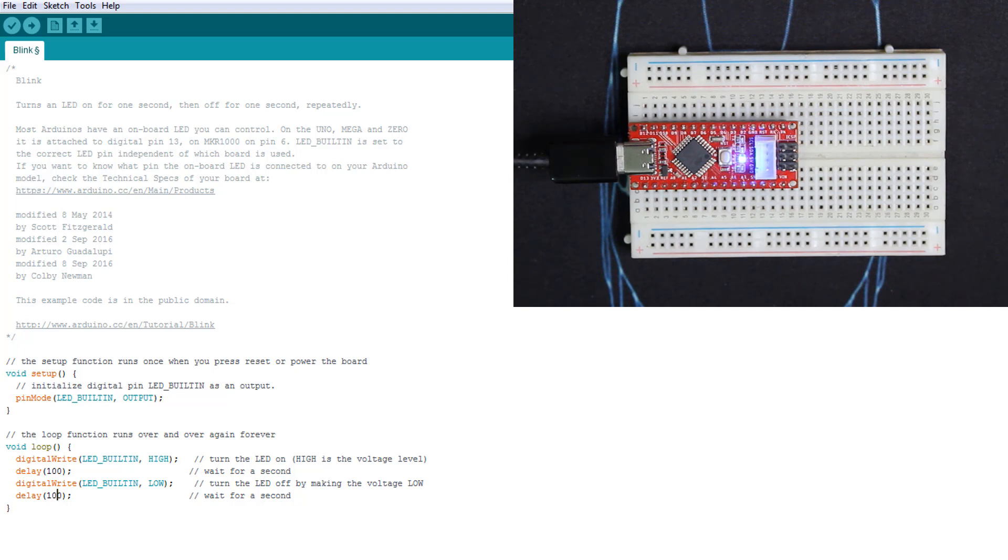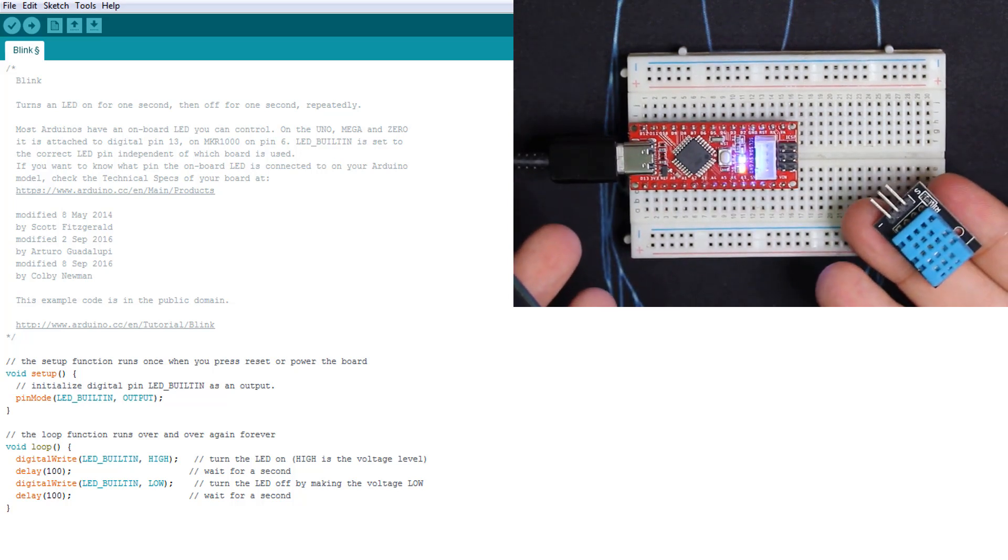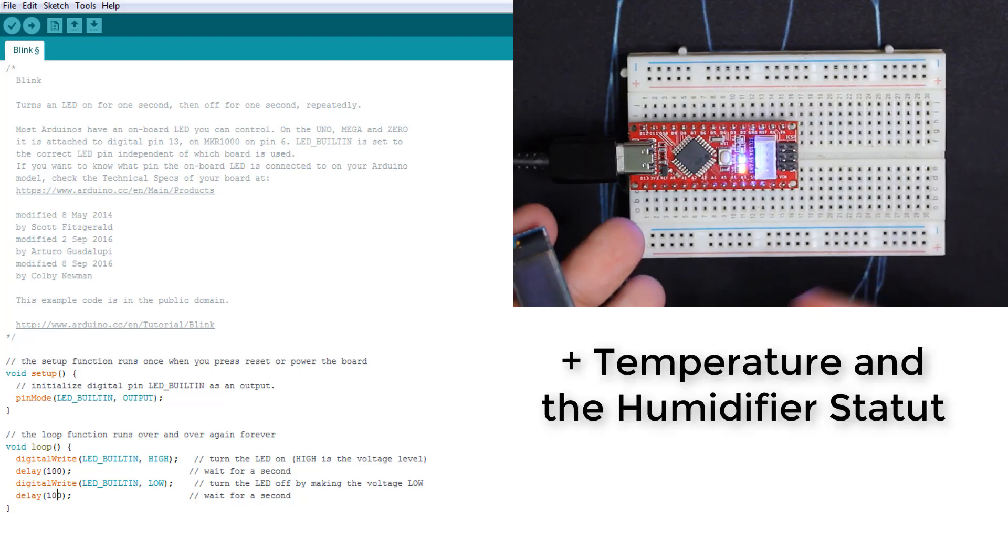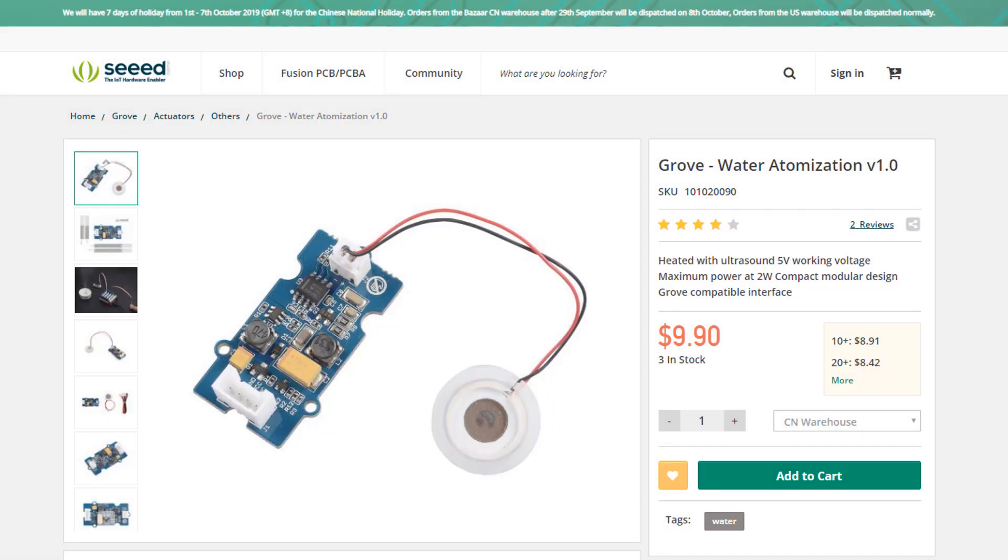Now we're going to use the Grove water atomization module. First we'll test it, and second we'll make a humidifier project using a DHT11 temperature and humidity sensor and an OLED to show the humidity.